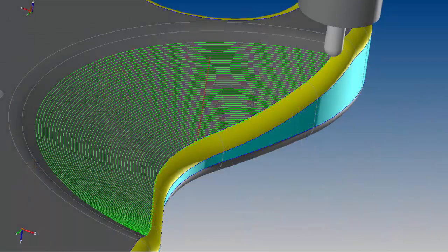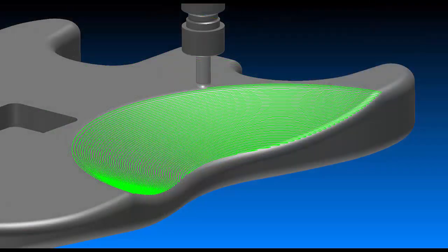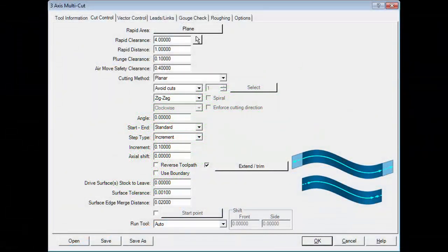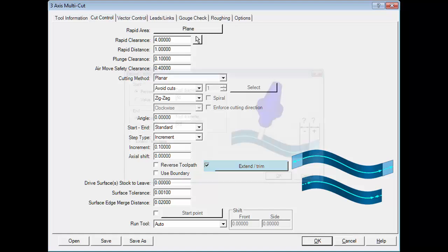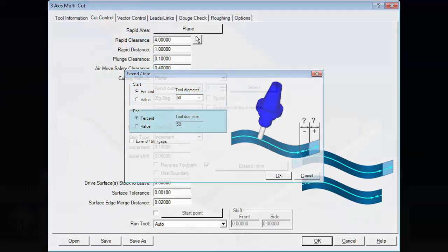There are a number of enhancements that make the 3-axis multi-cut a step above typical 3-axis toolpaths. Witness lines at surface edges can be eliminated with one click by automatically extending or trimming a toolpath past a surface.